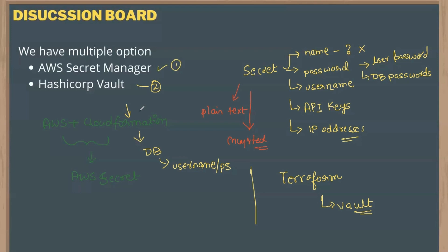There can also be a counter question regarding encryption — what kind of encryption are you using? If you are not aware of the specific encryption details, you can safely answer: 'Because we are using AWS Secret Manager, from what I am aware, there is a built-in security encryption in AWS Secret Manager which is being used. We are not using any customized encryption at this point of time.' Remember: AWS Secret Manager and HashiCorp Vault — know how to present your answer whether you are using CloudFormation or Terraform, and how to handle encryption follow-up questions. That is it for this video — thank you.